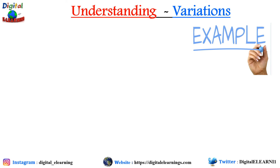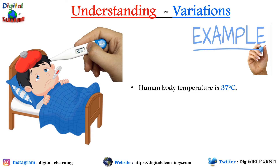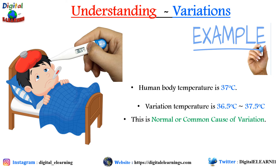Let's take an example to understand this concept better. Our human body temperature is 37 degrees centigrade on average — it is not exactly 37 all the time; it has variation. Temperature goes from 36.5 to 37.5 — this is all normal, or common. The body temperature has a controlled, stable variation due to the common cause of variation. That is how your body normally behaves, and this is called the common cause of variation.